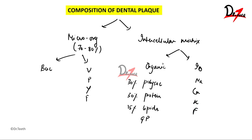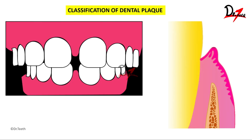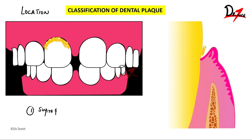Now let's discuss the classification of dental plaque. We can classify dental plaque based upon location. The first is supra-gingival plaque. If this is the gingival margin, then the plaque formed coronal to the gingival margin is the supra-gingival plaque — it can be seen with the naked eye. Whereas if it is seen apical to the gingival margin, it is called sub-gingival plaque.